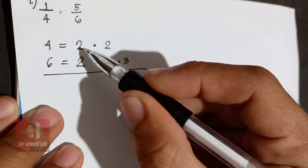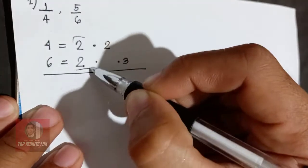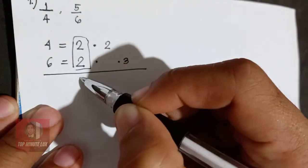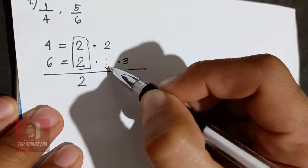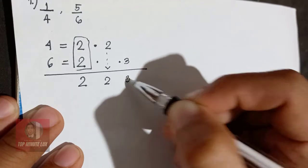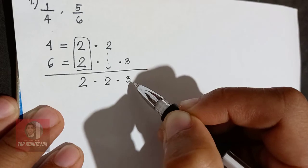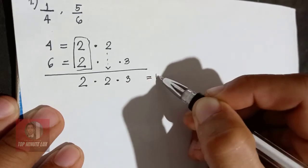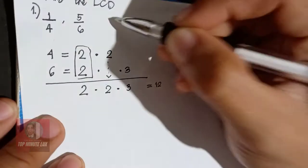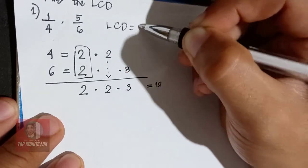As you can observe, there is a space between 2 and 3. It is because we are to bring them down. Bring the common. So here for the 2, the common is 2. Bring down also 2 and bring down also 3. Then multiply, 2 times 2, 4 times 2, 12. So the LCD is 12.